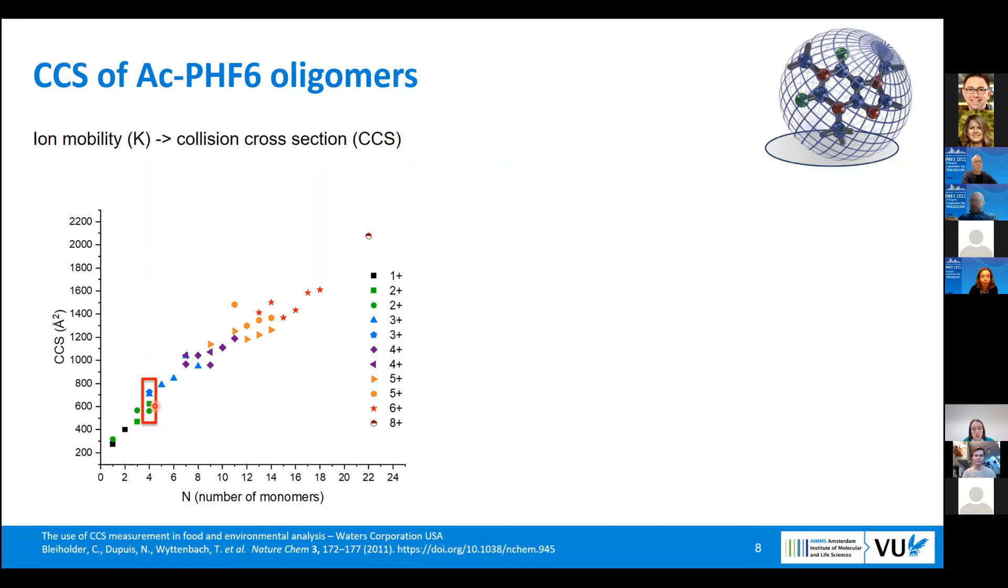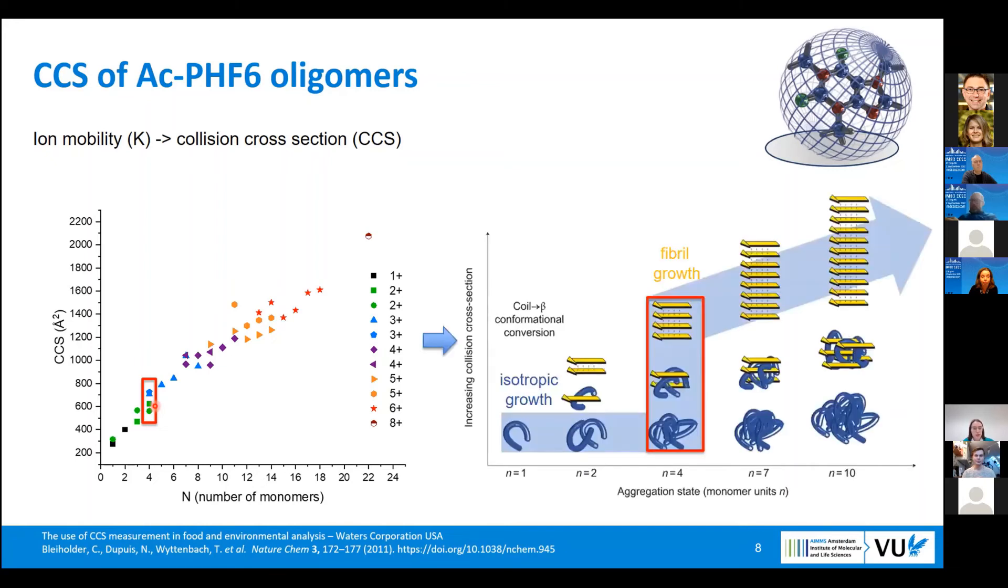Why is this important? Because we want to predict the growth of oligomers, how they grow. For example, they can grow isotropically, like compact globular structures, which is shown here in blue. Or they can also grow in another fashion, like fibrils, and that is shown here in yellow structures.